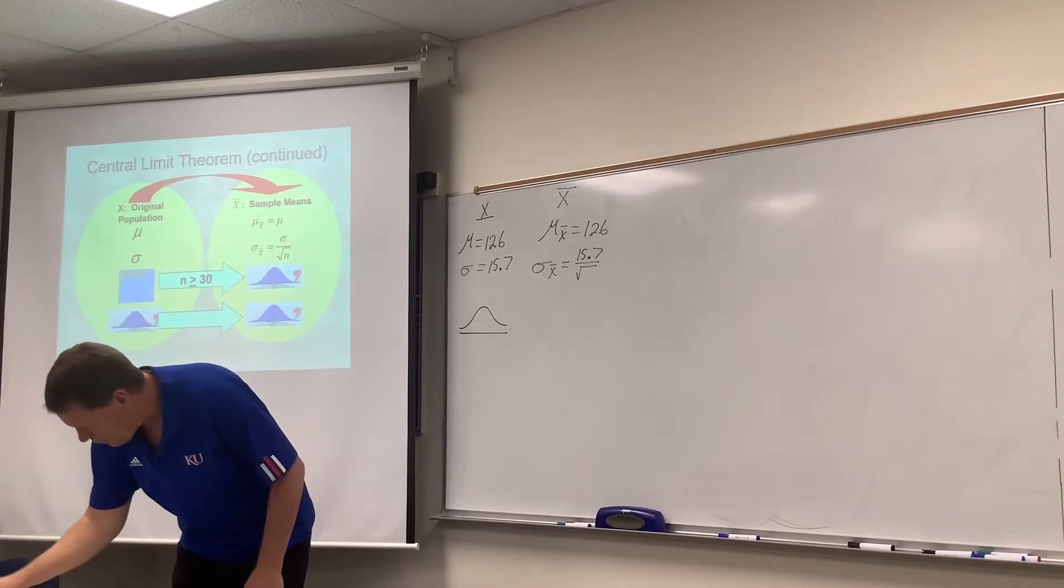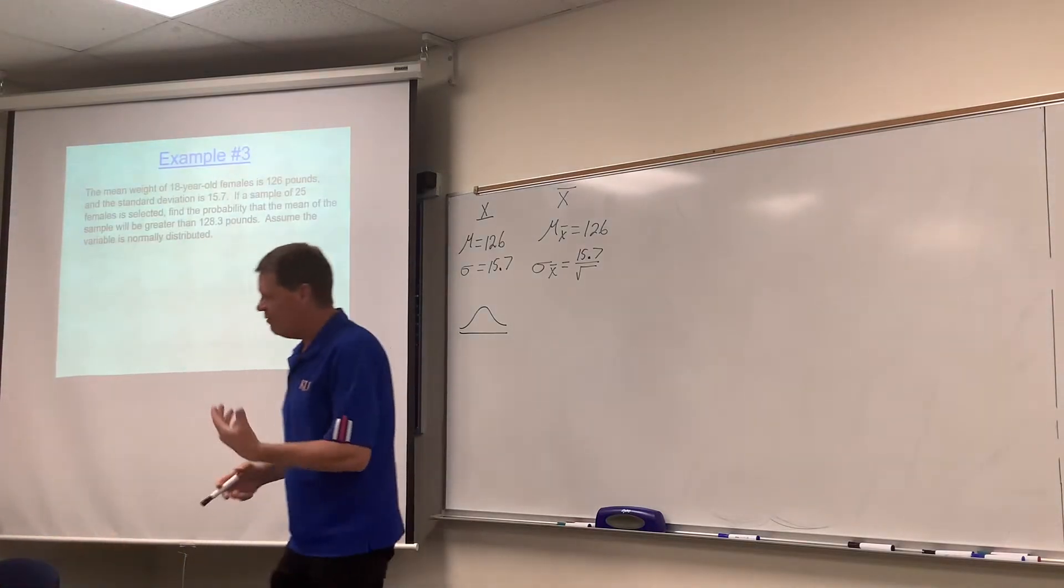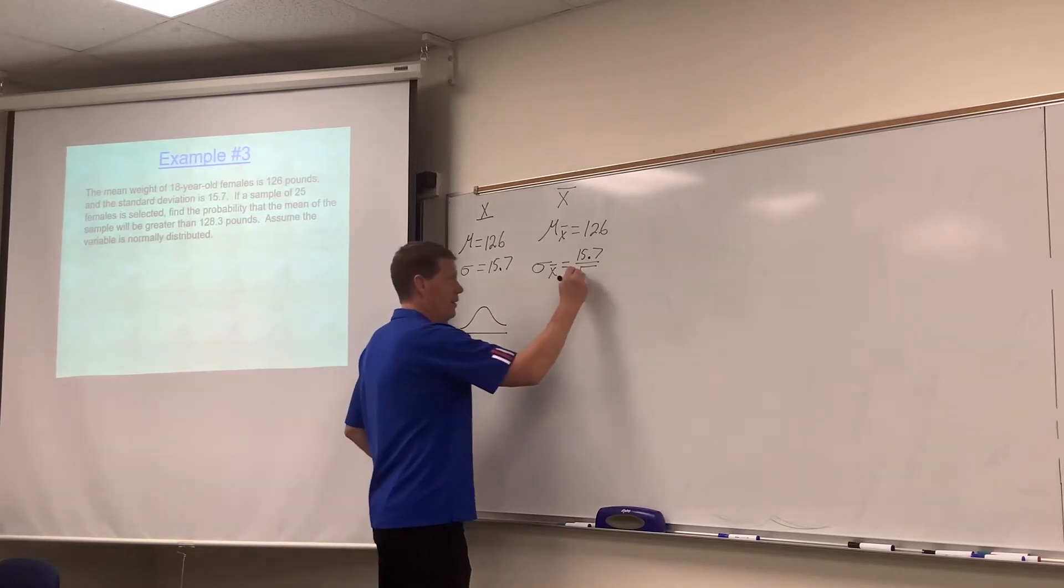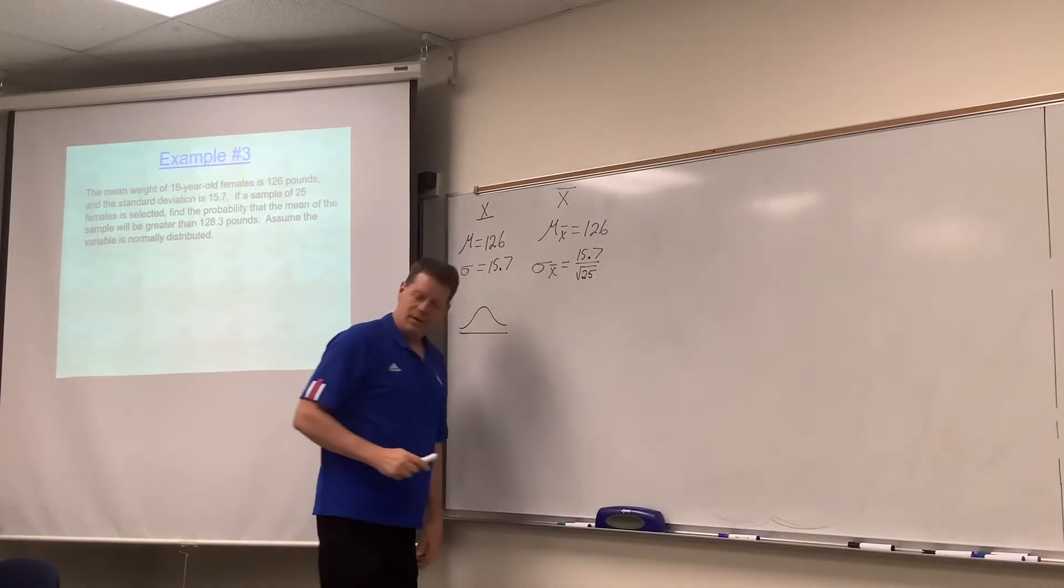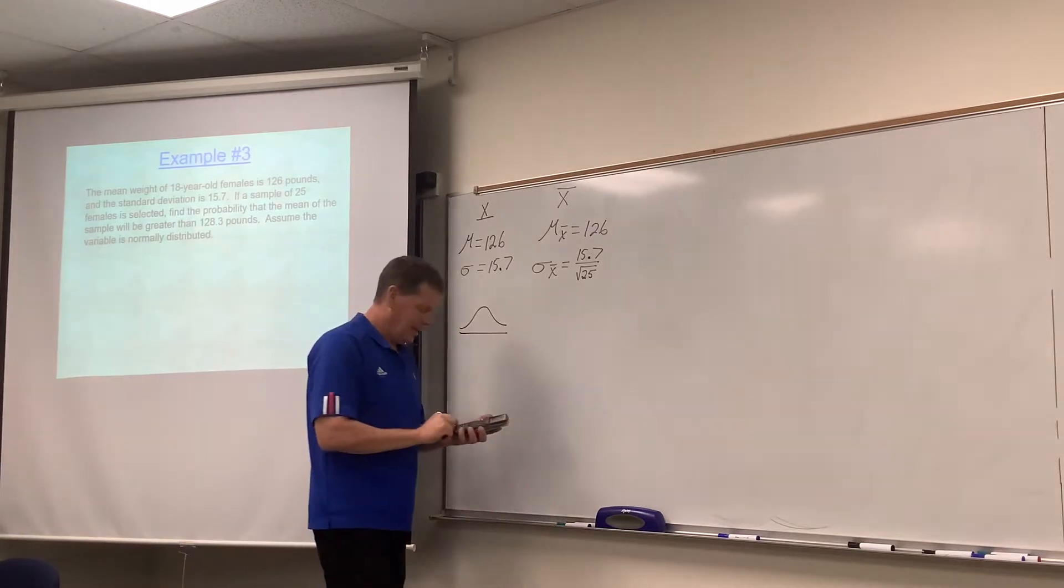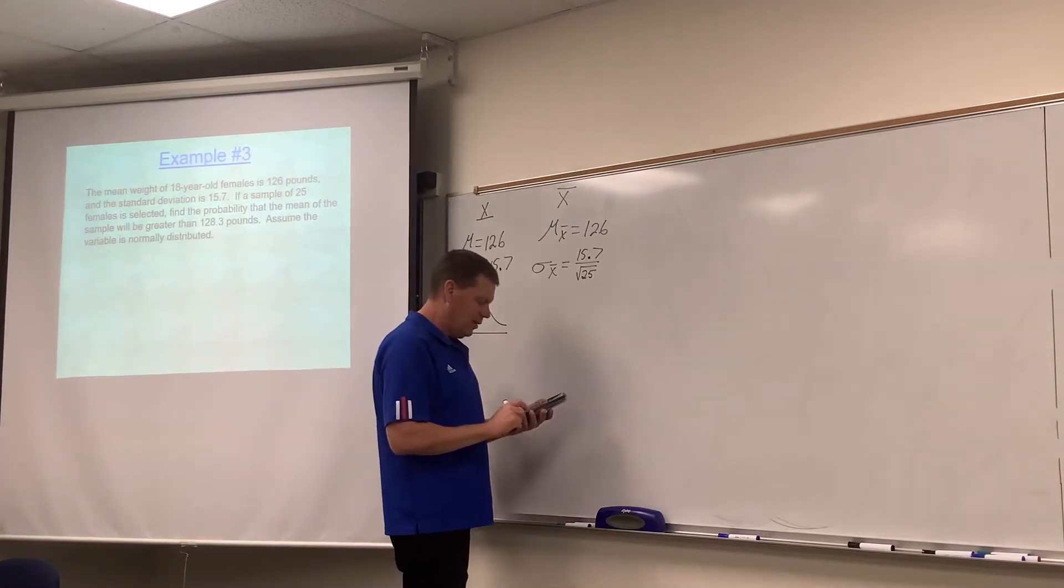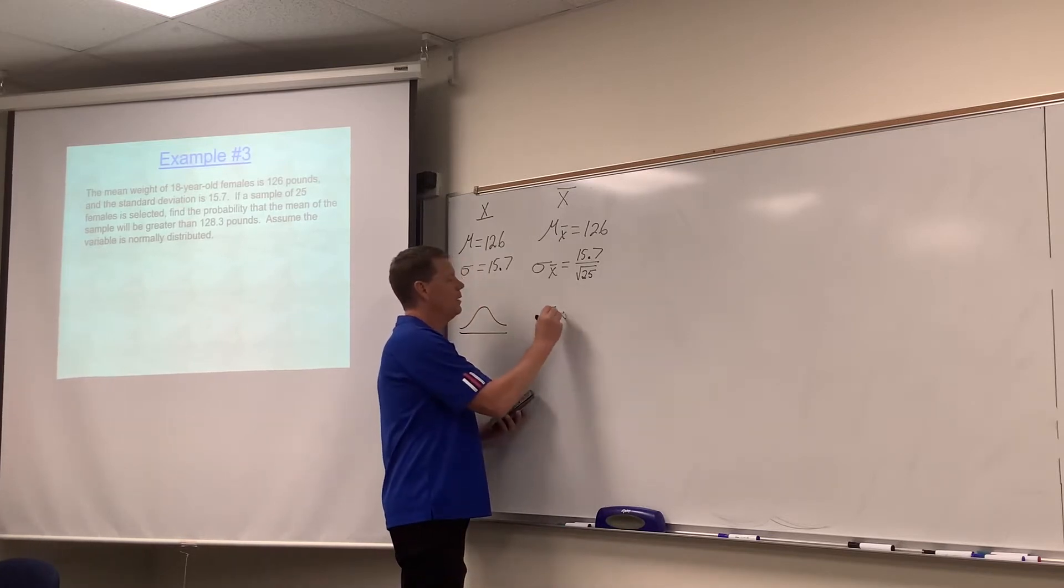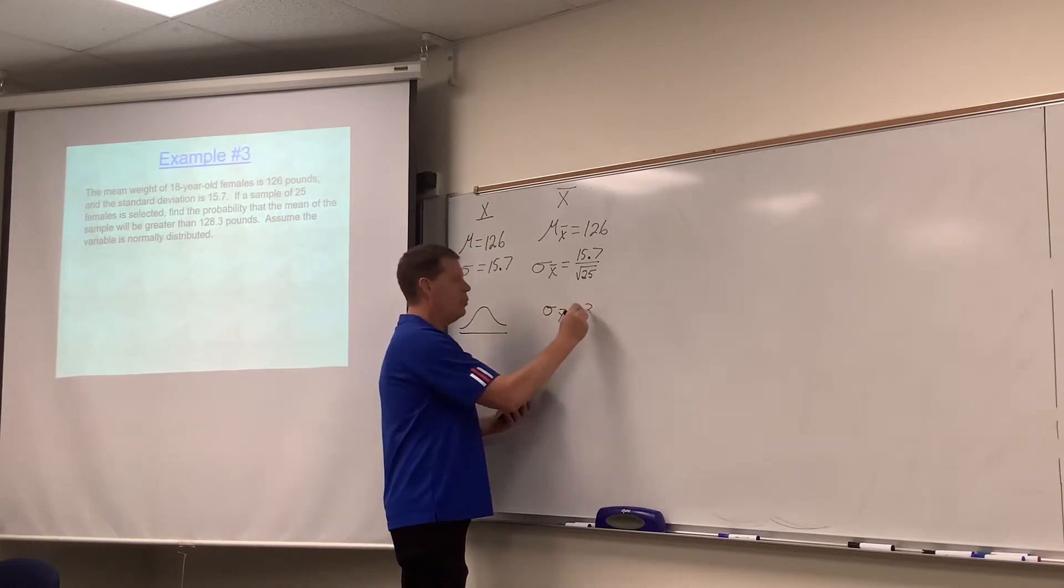And again, if we go back and read the question, we will see that the value of N is the fact that they sampled 25. Which the square root of 25 happens to be 5. You're welcome. We can do that one in our head. So this new standard deviation turns out to be 3.14.